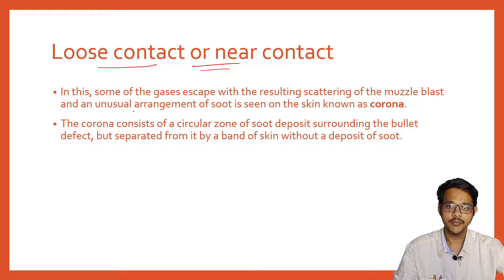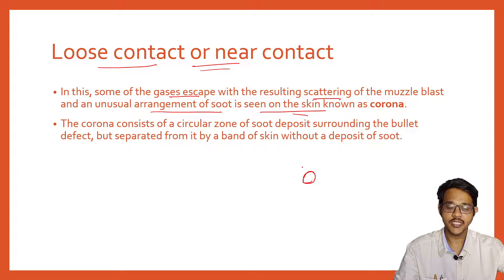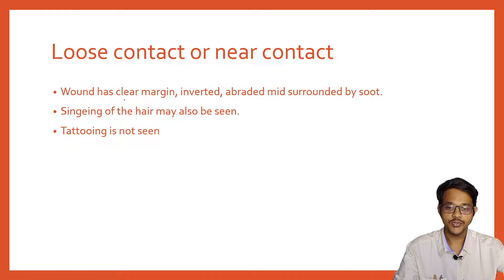Next is loose contact or near contact shot. The contact is not firm; sometimes due to recoil the person cannot firmly adhere the muzzle to the skin. Some gases escape, resulting in scattering of the muzzle blast, and an unusual arrangement of soot called a 'corona' is seen. The corona consists of a circular zone of soot deposit surrounding the bullet defect but separated from it by a band of skin without soot. The wound has clear, inverted, abraded margins surrounded by soot.